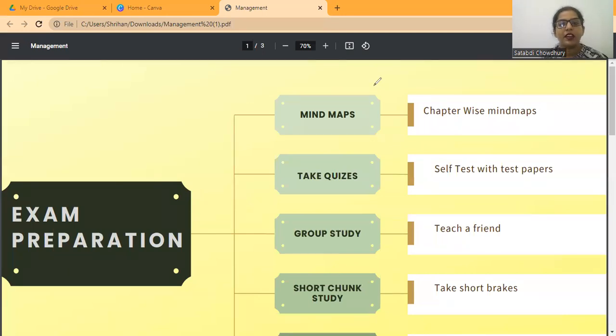As you can see on the screen, first thing that comes is creating mind maps chapter-wise. Before I tell you what is a mind map and how do you prepare chapter-wise, I am assuming that you have already read all chapters thoroughly because it is already exam time. Once you have done that, you need to prepare mind maps chapter-wise. This is a very important and interesting thing which will help you in the long run. Please note down whatever I am saying.